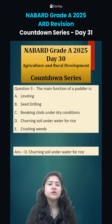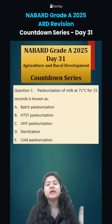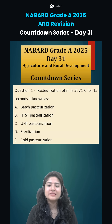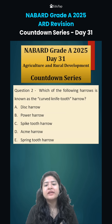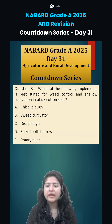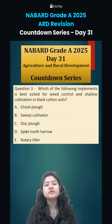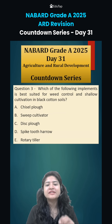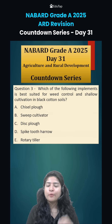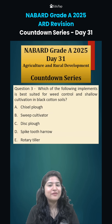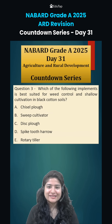So those were the questions from yesterday. Now your homework for today: first, pasteurization of milk at 71 degrees for 15 seconds is known as what? Second, which of the following harrows is known as the curved knife tooth harrow? Third, which of the following implements is best suited for weed control and shallow cultivation in black cotton soil? Comment your answers and we will discuss in the next class.